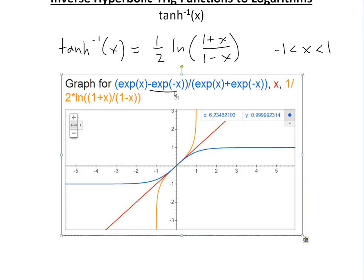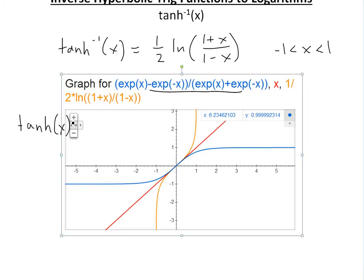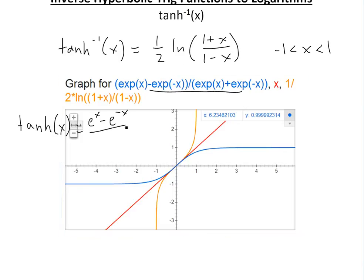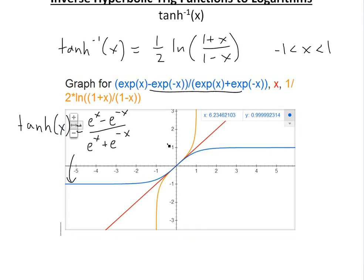This function right here is just hyperbolic tan of x, which equals (e to the x minus e to the negative x) divided by (e to the x plus e to the negative x). That's by using the definition that it's equal to hyperbolic sine of x divided by hyperbolic cosine of x. This is the blue curve, and as you can see it goes between negative 1 and 1.